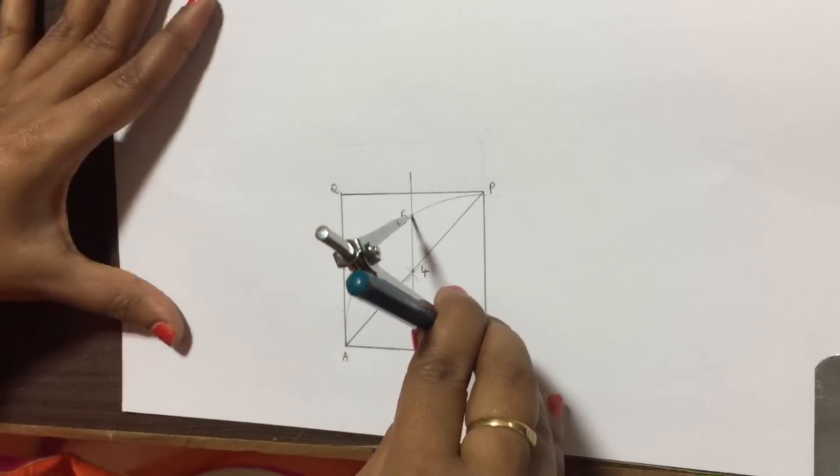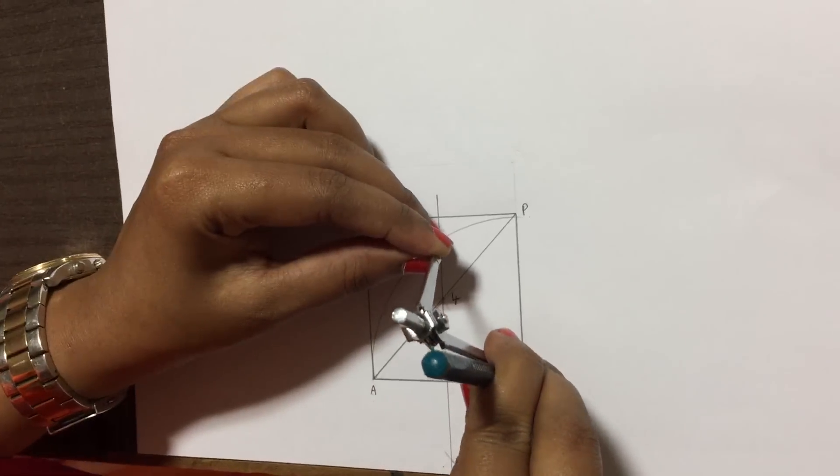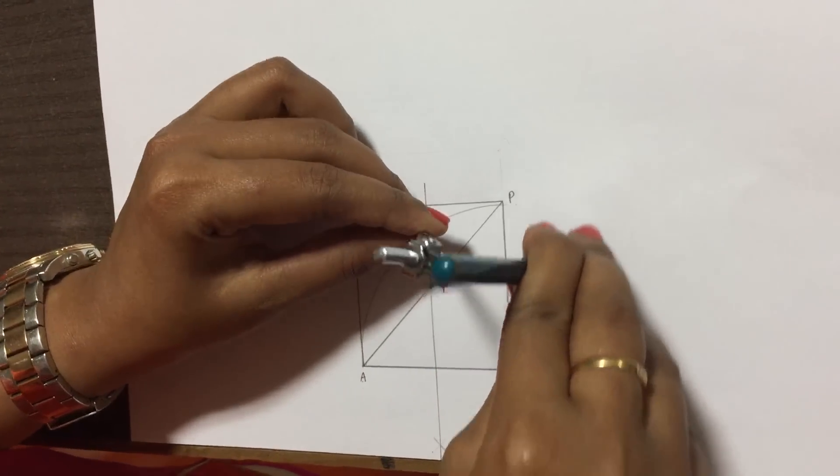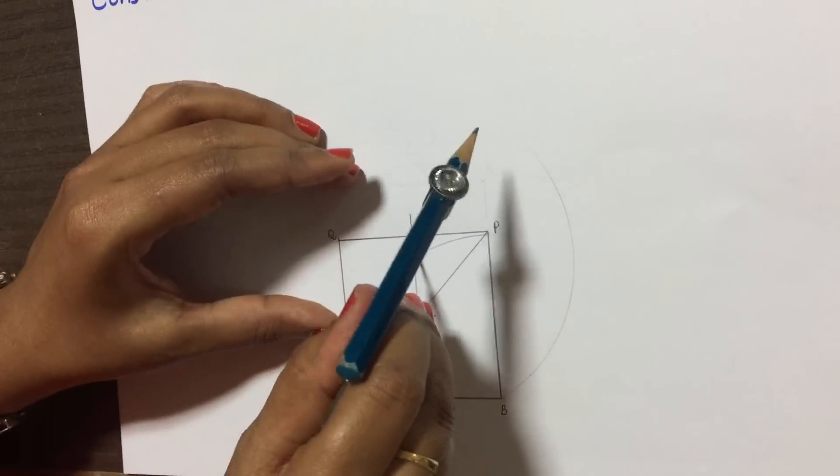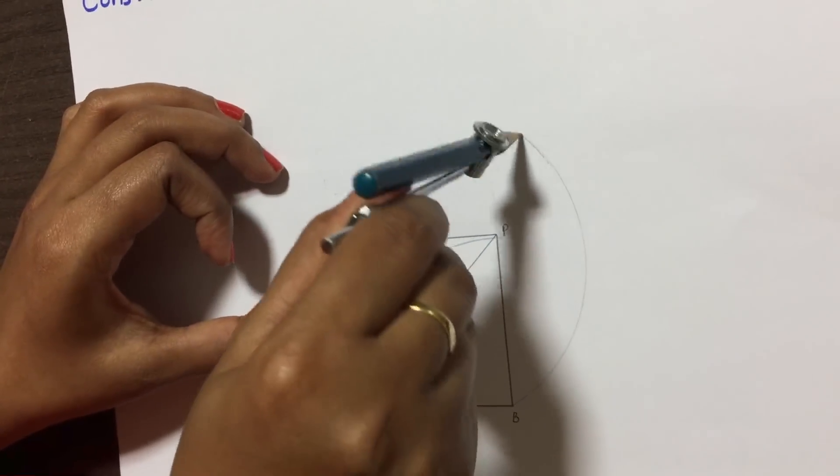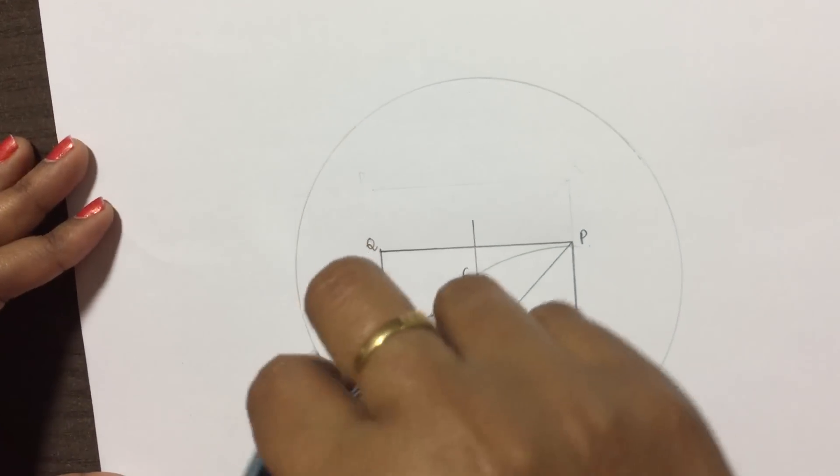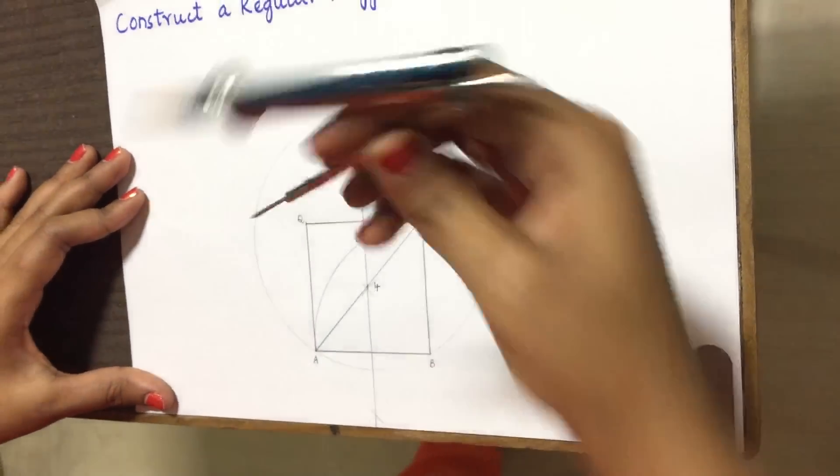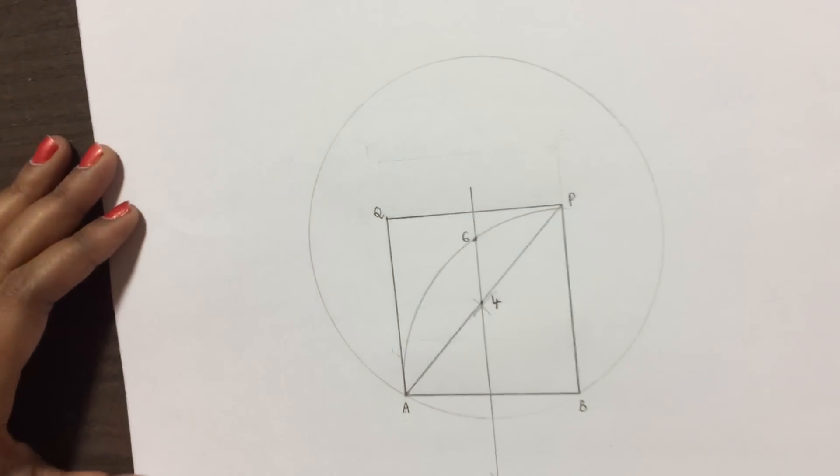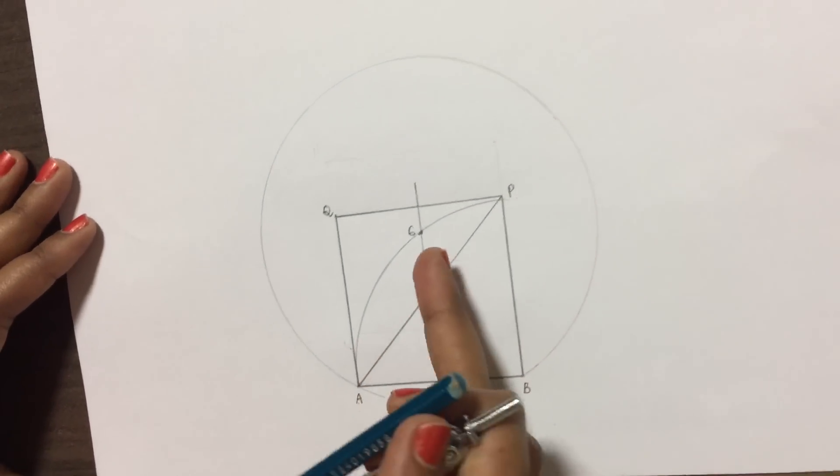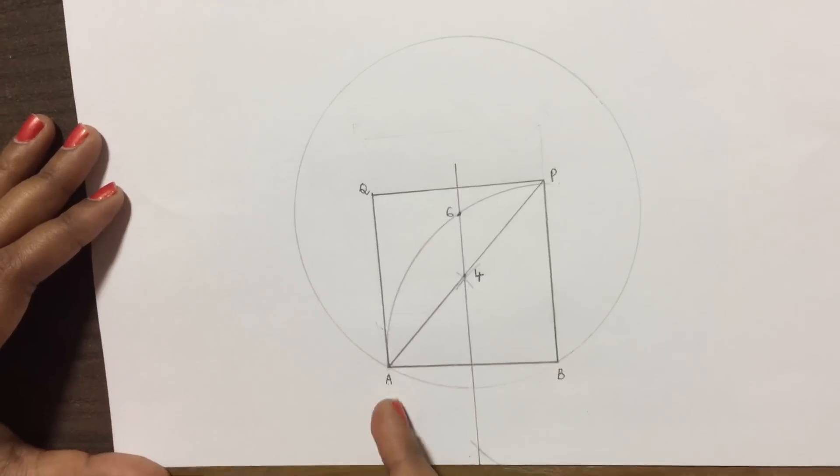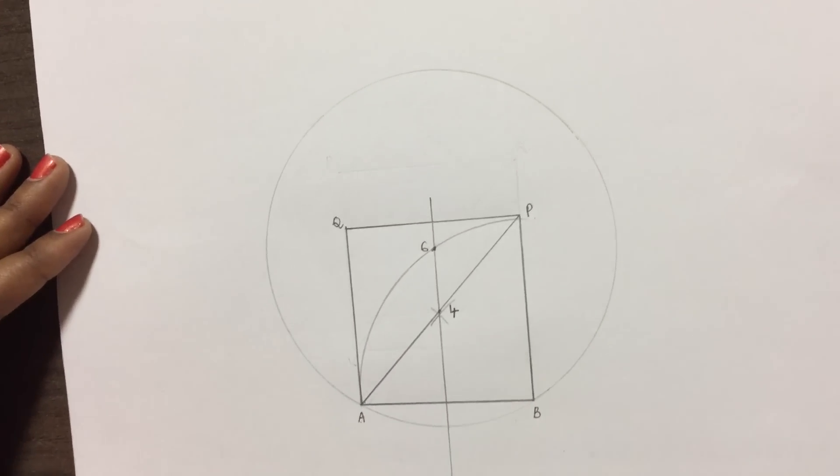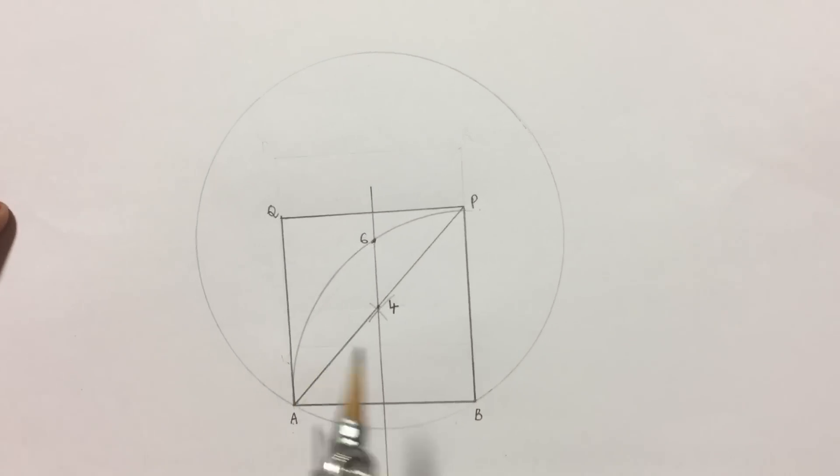With AB as radius I'll draw a circle, then you have to take 6A as radius and draw a circle touching A and B.